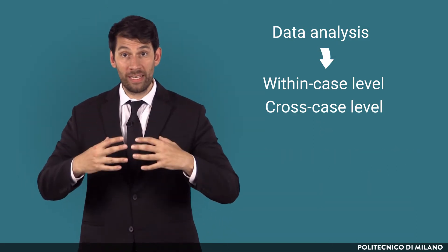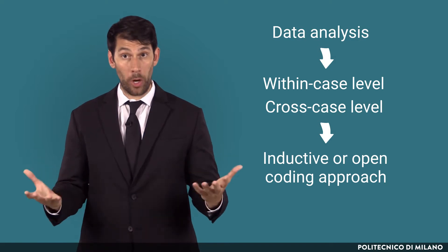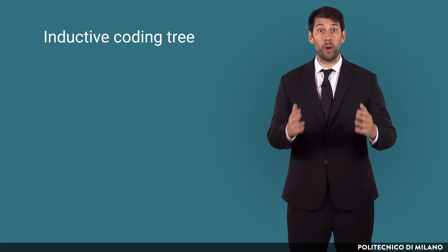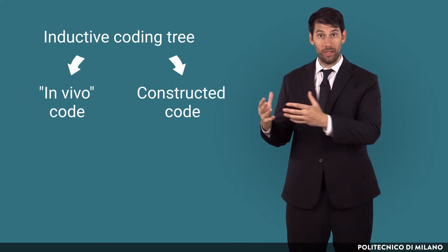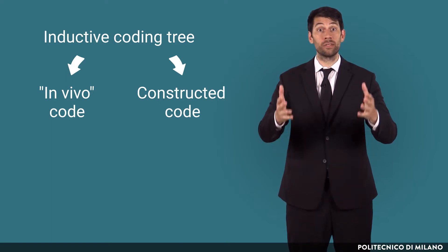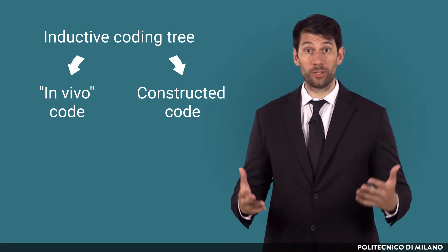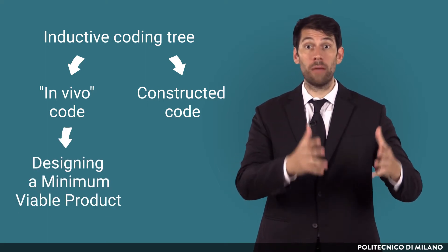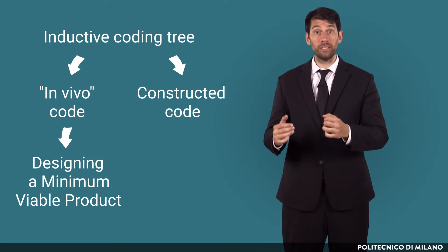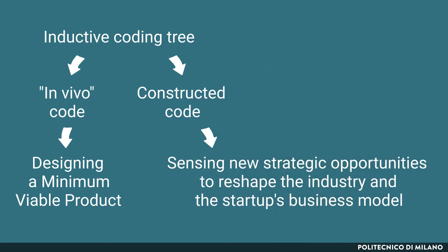For both within-case and cross-case content analysis from interviews, I followed the inductive or open-coding approach. For each of the three cases, I built an inductive coding tree based on both in vivo and constructed codes, reporting the very wording informants used to describe the process investigated, as well as constructed codes I induced. For instance, an in vivo code that emerged from the entrepreneur's interview was 'designing a minimum viable product,' while a constructed code I built from the dynamic capability theory was 'sensing new strategic opportunities to reshape the industry and startup's business model.'